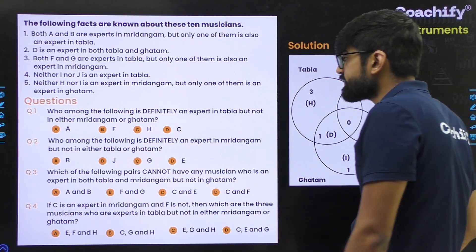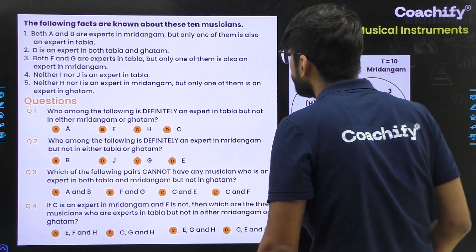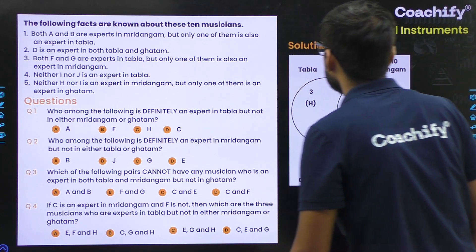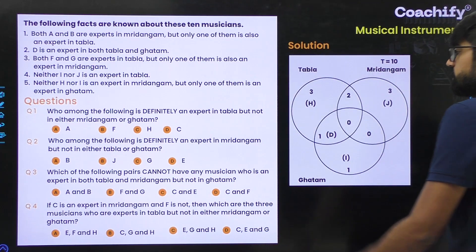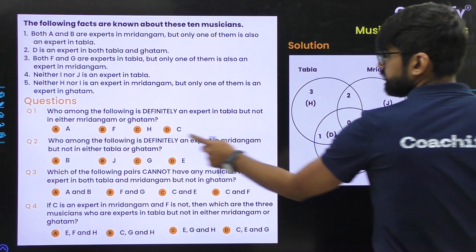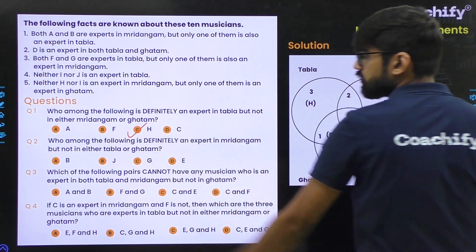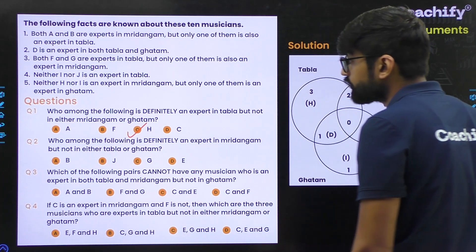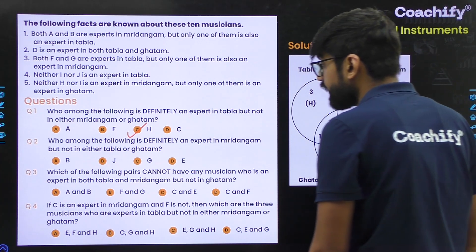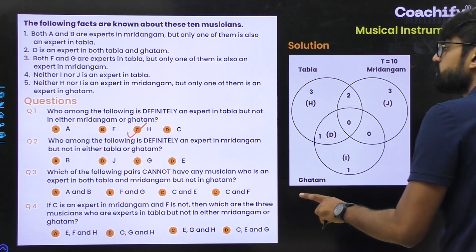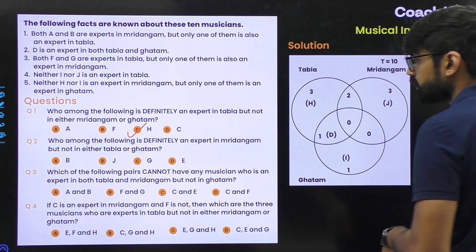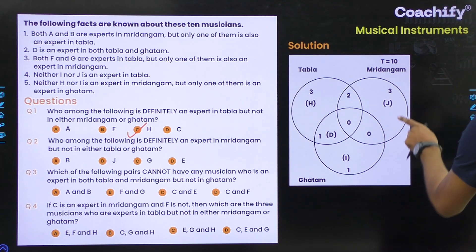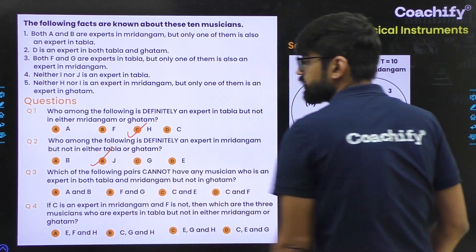Question 1: Who amongst the following is definitely an expert in tabla but not in either mridangam or ghatam? Definitely in only-tabla — we can see H. Question 2: Who amongst the following is definitely an expert in mridangam but not in either tabla or ghatam? Definitely in only-mridangam — that is J.